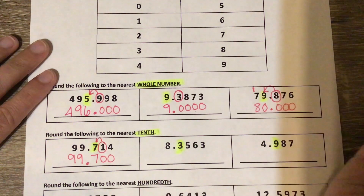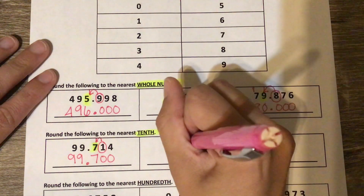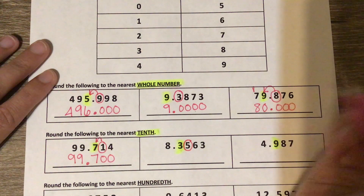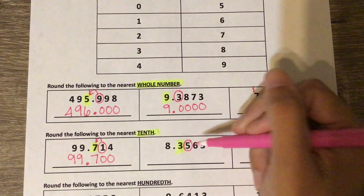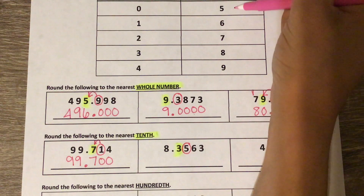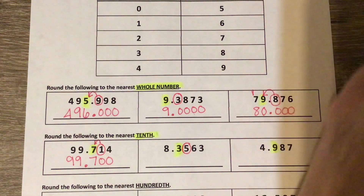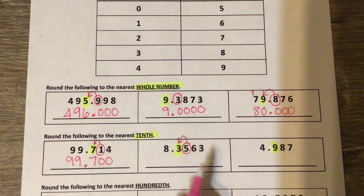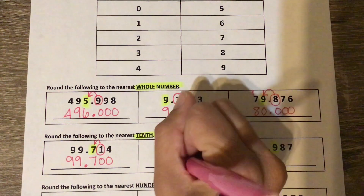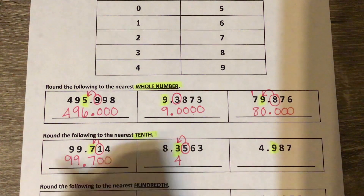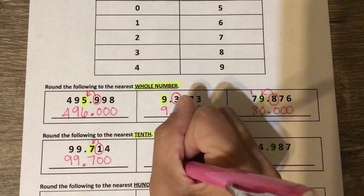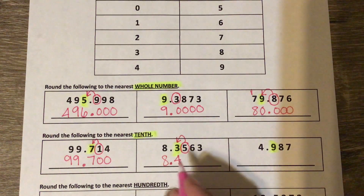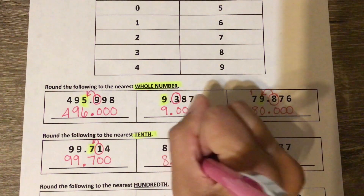Looking at the second one: I've highlighted the tenths place and I circle the hundredths place, which is five. Five can be a little tricky, but five is the first value where we start rounding up. So the five makes the three round up to a four. Everything to the left stays the same — bring down my decimal, bring down my eight. Everything to the right becomes zero.